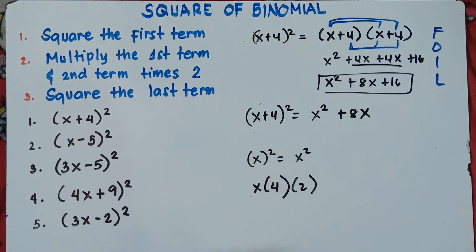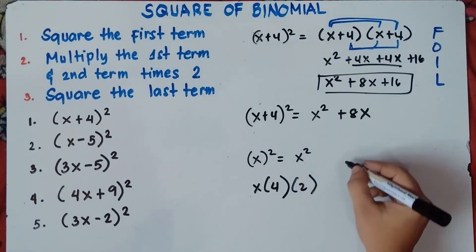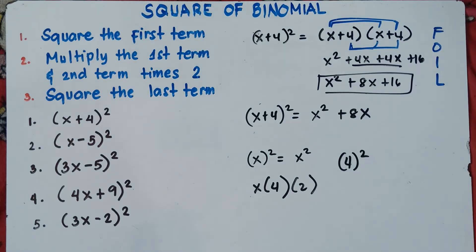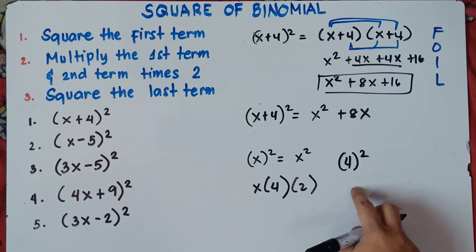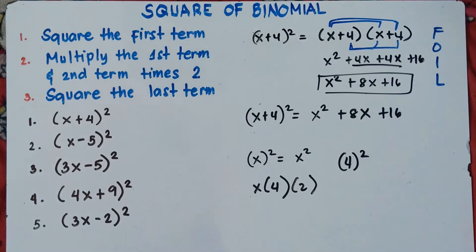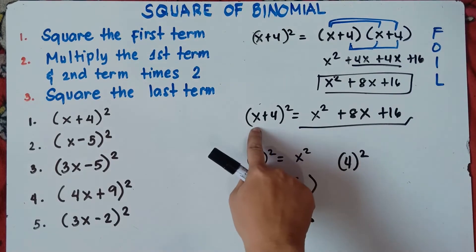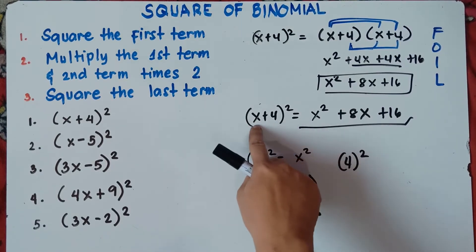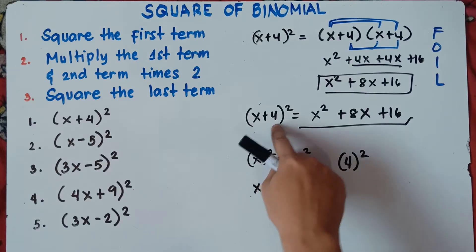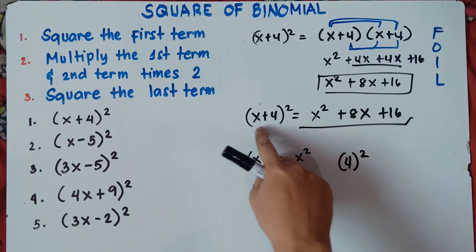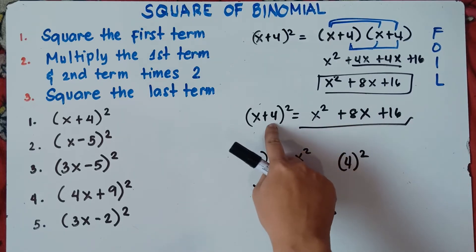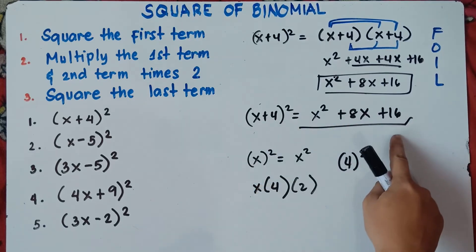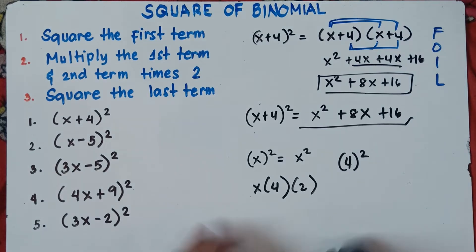And then last, square the last term: 4 squared doesn't mean 4 times 2 — it means 4 times 4, which is 16. So the answer for number 1 is x squared plus 8x plus 16. Easy, right? Square the first term, multiply the first and second term times 2 to get 8x, then square the last term: 4 times 4 is 16.